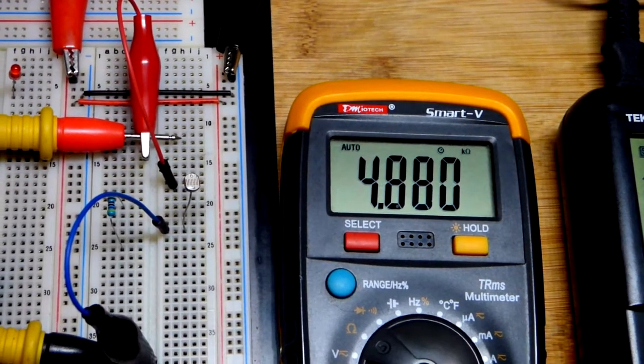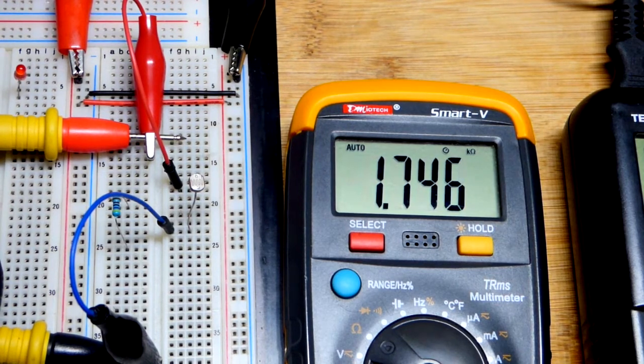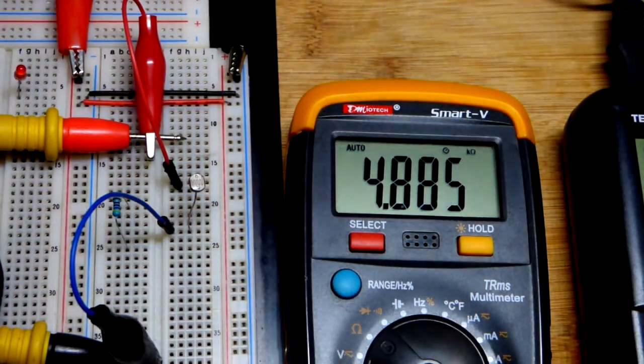So this is my lamp at a low light level. I'll turn it up and you can see we got it brighter. The light dependent resistor is conducting better.